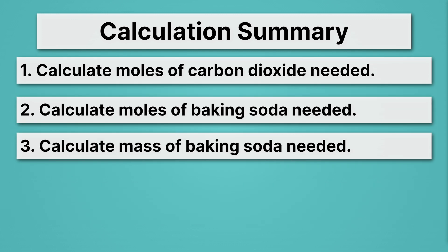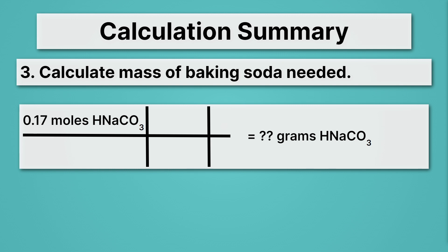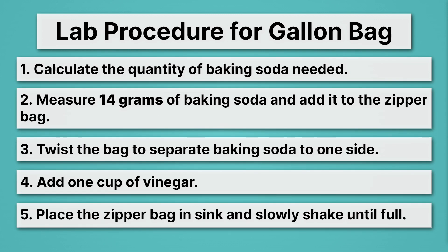Lastly, let's calculate the mass of baking soda needed, because our scale measures grams, not moles. We start with our 0.17 moles and use the molar mass of baking soda: 84 grams per one mole. That gives us 14 grams of baking soda, rounded to two significant figures. So our lab procedure for the gallon bag is: calculate the quantity needed, measure 14 grams of baking soda and add it to the zipper bag, twist the bag to separate the baking soda to one side, add one cup of vinegar, then place the bag in the sink and slowly shake until the gas fills the gallon bag.